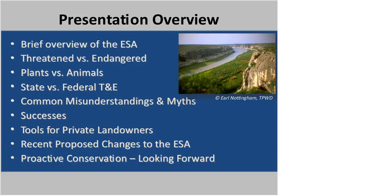A quick overview of this presentation: I'll give a brief history of the Endangered Species Act, covering some history and basic information about the Act and how decisions are made about which species to list and when to delist them. I'll explain the difference between threatened and endangered species listings, and the differences between state listed and federally listed species. I'll cover common misunderstandings and myths, highlight successes of the Act, cover tools available to private landowners, and discuss recent proposed changes and the importance of proactive conservation.